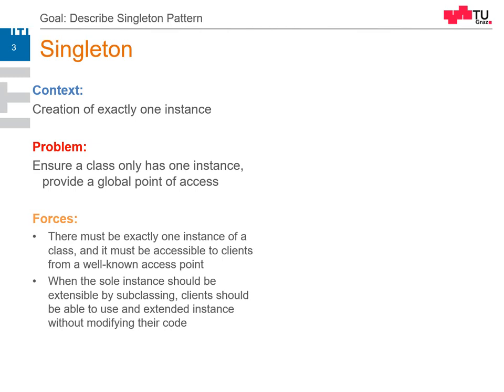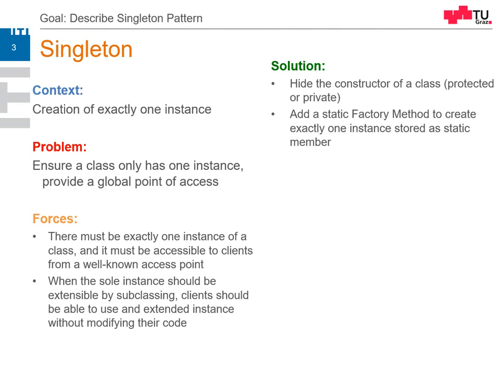When we want to inherit from this instance, we want to use it without having to change our clients. The solution is, firstly, to hide the constructor and the copy assignment operator of a class — make it protected or private. Then we have to add a static factory method which returns the static instance, which is stored in a static member.